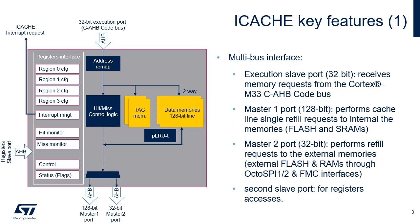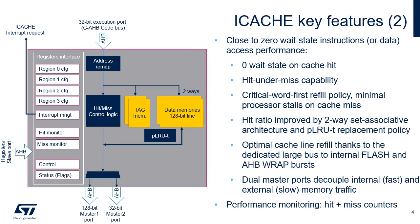The request is forwarded to the external memory on the iCache master 1 or 2 port in the same clock cycle. Only the address may be modified due to the address remapping feature. The iCache offers close to zero wait states data read/write access performance due to zero wait state on cache hit, and hit under miss capability that serves new processor requests while a line refill due to a previous cache miss is still going on. The critical word first refill policy minimizes processor stalls on cache miss. The hit ratio is improved by the two-way set associative architecture and the pseudo least recently used binary tree replacement policy.